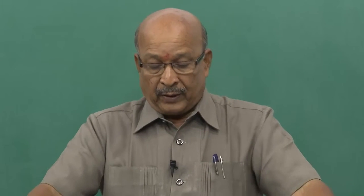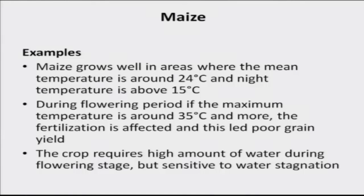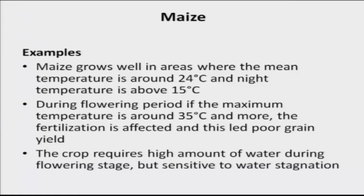The maize crop requires a high amount of water during the flowering stage but is sensitive to water stagnation. It needs water but does not require stagnation — 80% to 100% available soil moisture must be maintained, but there must not be any water stagnation. If water gets stagnated over the surface of the field, oxygen does not go into the soil profile, so roots do not get oxygen and the crop wilts and fails. That is why the crop should not have stagnation at this very sensitive flowering stage — for all crops, the flowering stage is very critical.